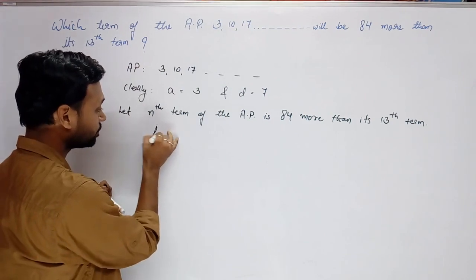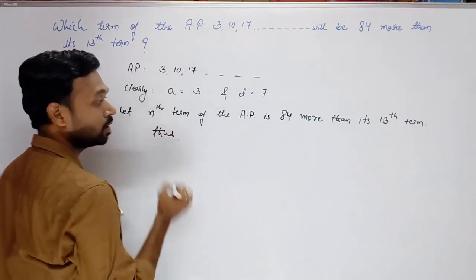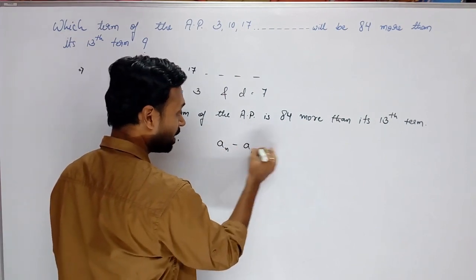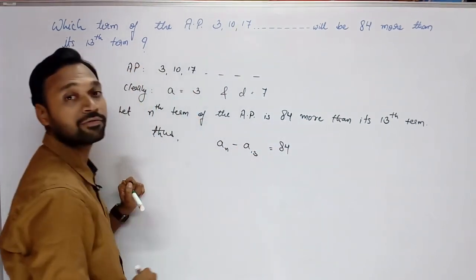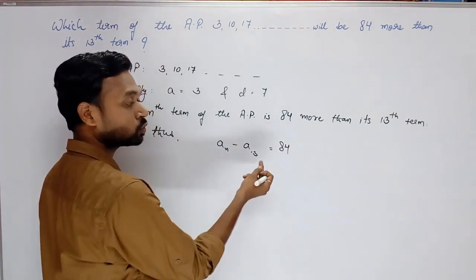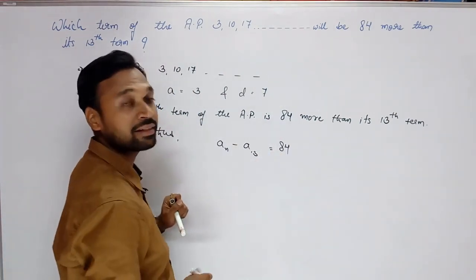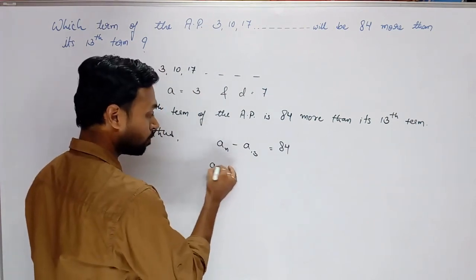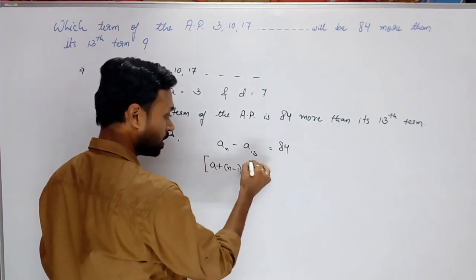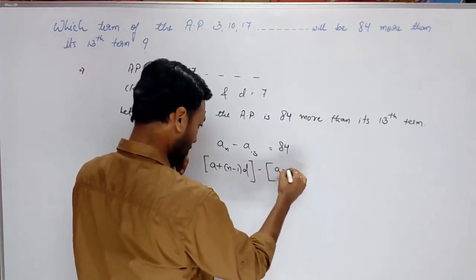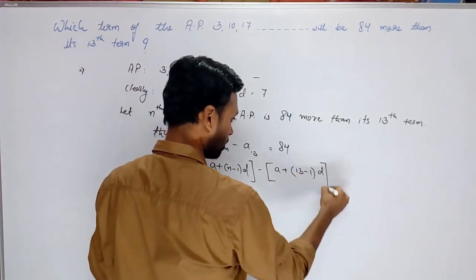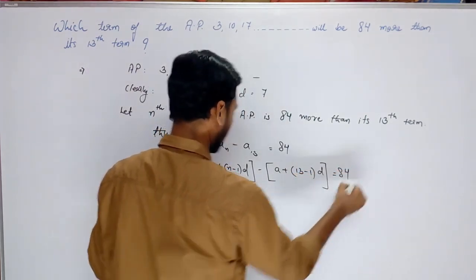Thus, a_n minus a_13 equals to 84. Theek hai, aap chahein to aise bhi likh sakte ho: a_n equals to 84 plus a_13. Theek hai, iske liye humne formula lagaya: a plus (n minus 1) into d. Aur a_13 ke liye: a plus (13 minus 1) into d, equals to 84.